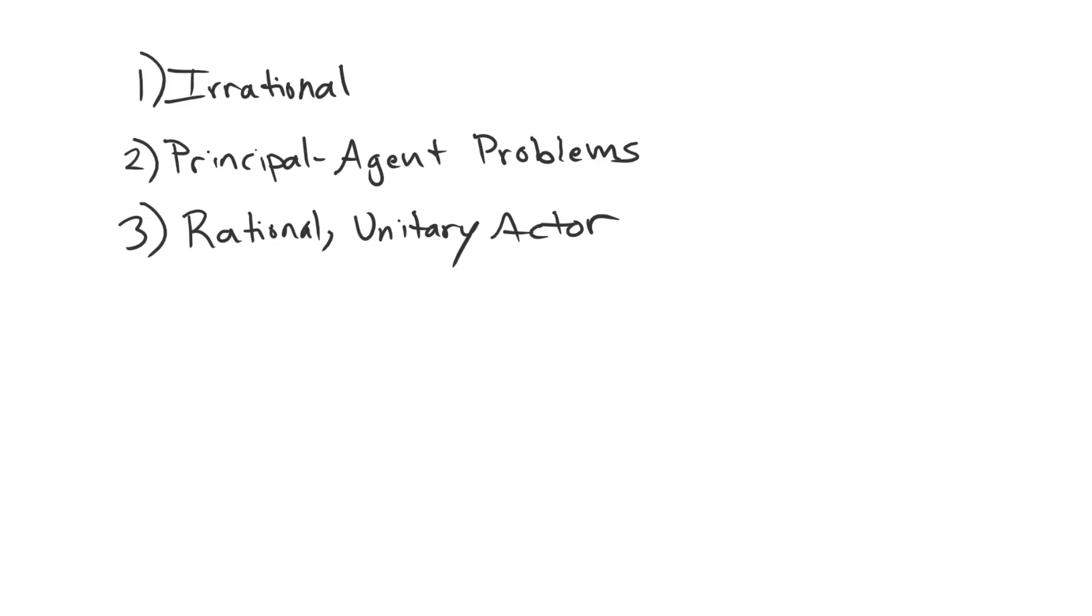The reason that we are focusing on this third class of explanations in this course is in part because this is what international relations scholars tend to focus on, at least in much greater depth than irrational or principal agent problem explanations for war. And the reason is actually not crazy. It's not because we have some sort of bias for rational unitary actor explanations. It's because we actually need to cover these sorts of things before we can actually properly address either of the first two points. What do I mean by that?